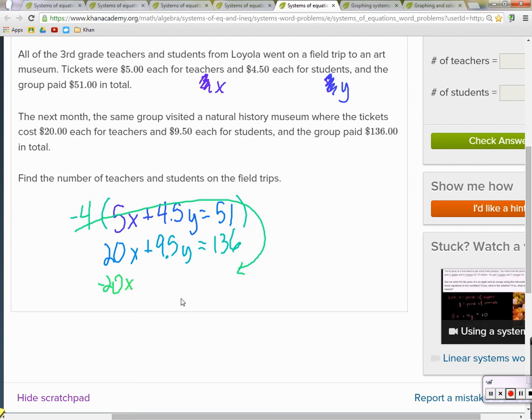Because we're not done writing this out yet, but when we do, we're going to add them together, and 20X minus 20X is going to be zero. There's going to be no more X's. We'll just have Y's to solve that. And 4 times 4.5, that's going to be negative 18Y. And 51 times negative 4. Negative 204. So we add them together.